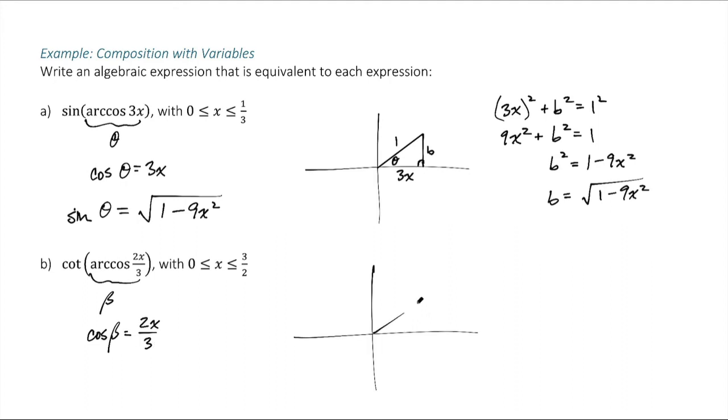And then I can just draw a little triangle. It doesn't matter how I draw it, really, as long as it's in the proper quadrant. And my angle beta, now cosine is adjacent over hypotenuse, so I could just call the adjacent 2x and the hypotenuse 3. And then solve for this side over here. We'll call that b and use Pythagorean theorem.